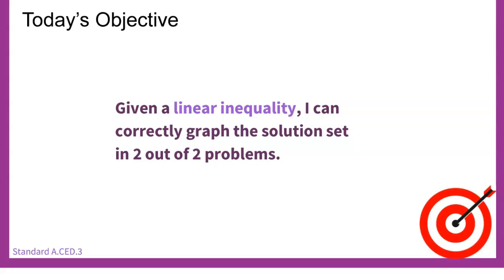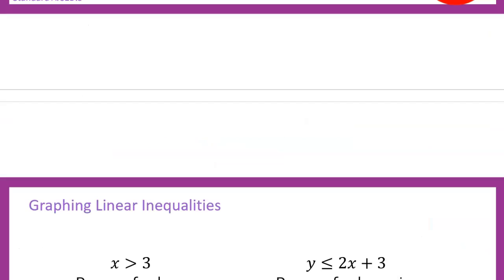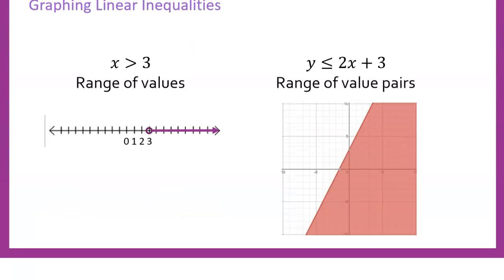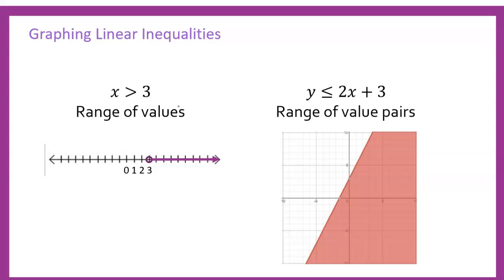In the last lesson we looked at linear inequalities in a context and graphed some points to figure out which ones worked and which ones didn't. Today we're going to be working specifically from the equation version of the inequality. We have one-variable inequalities and two-variable inequalities — these are the ones we're focusing on in this unit.